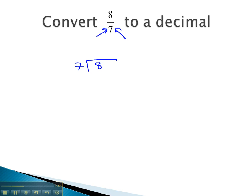This time, we can actually start dividing. 7 does go into 8 once. 1 times 7 is 7. Subtracting, and we get a 1.